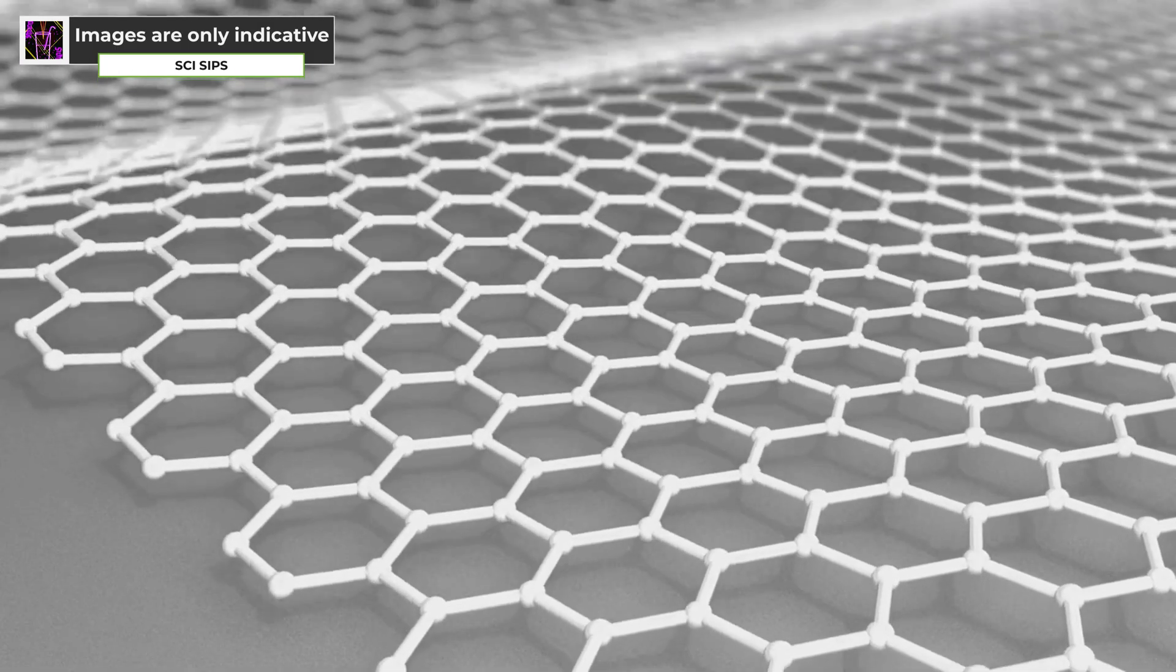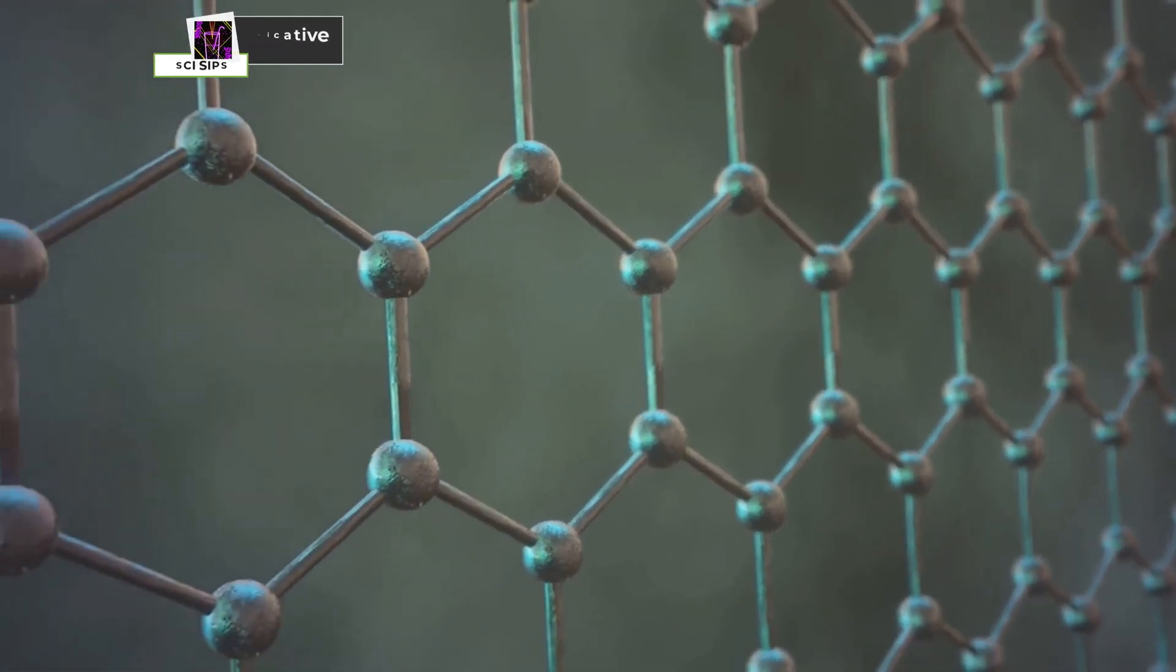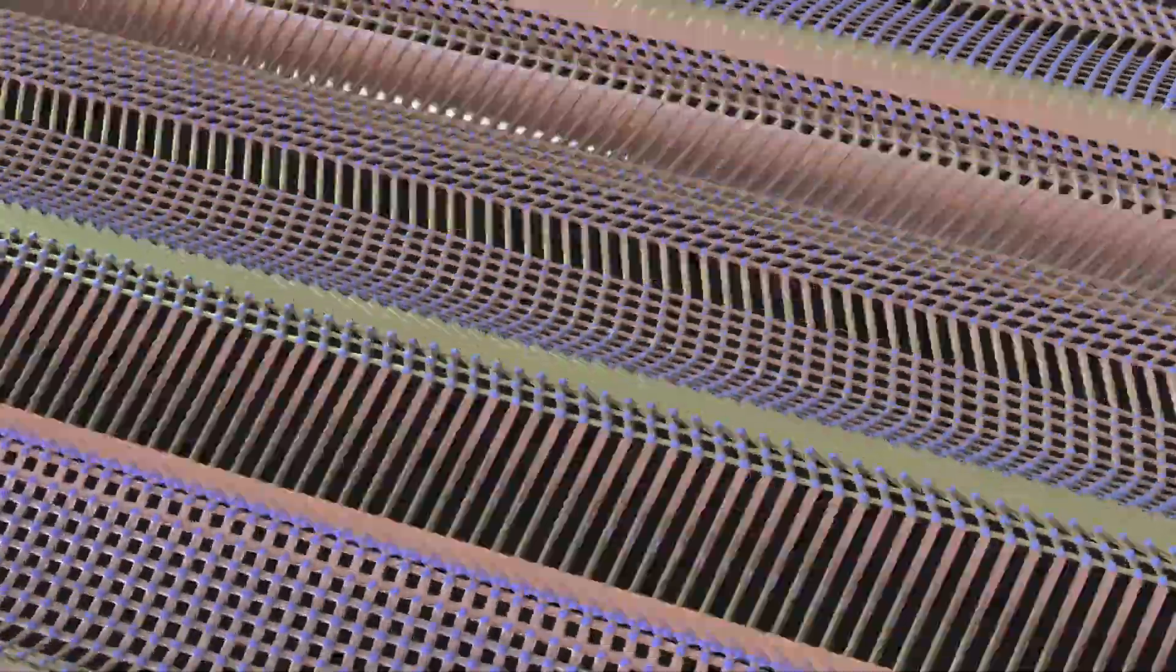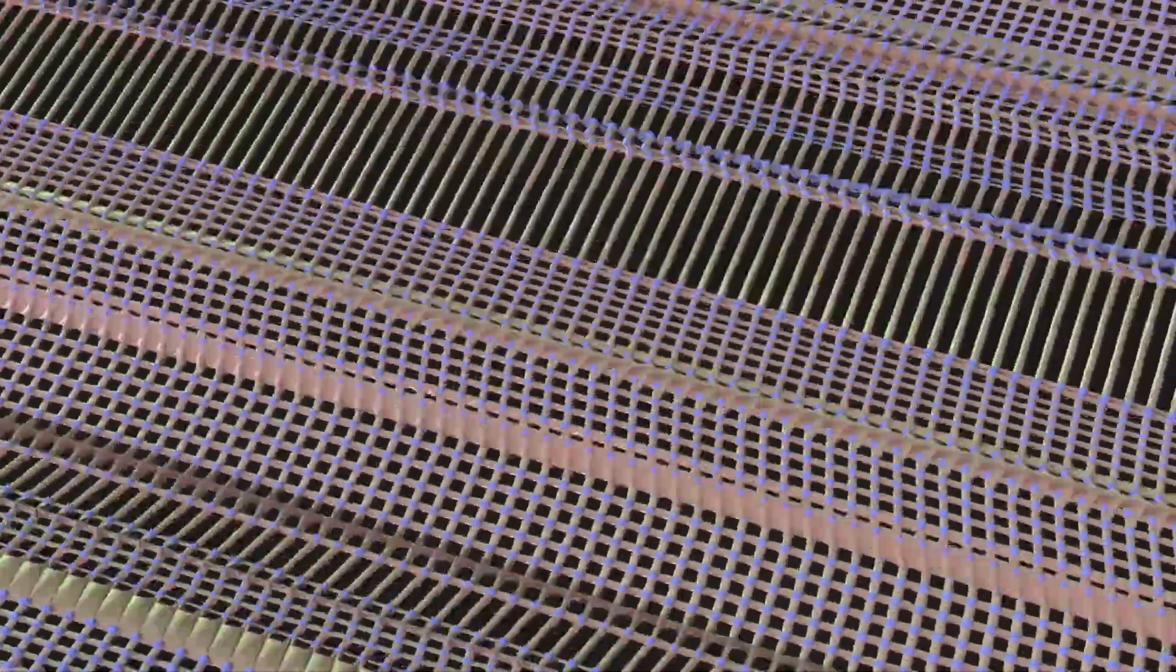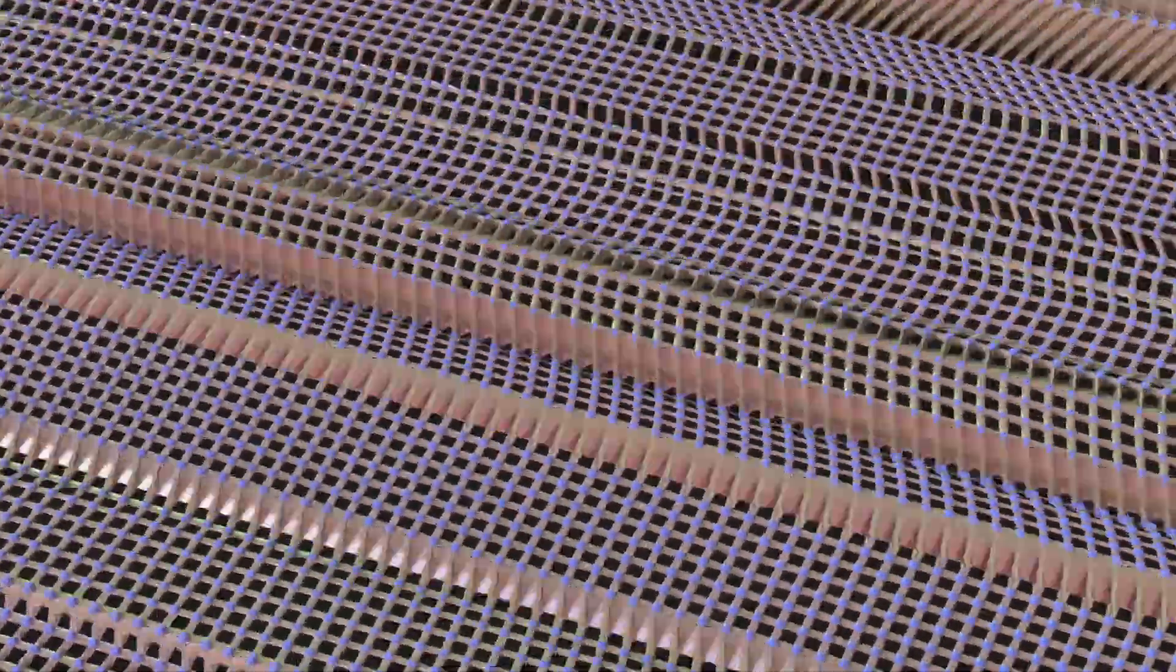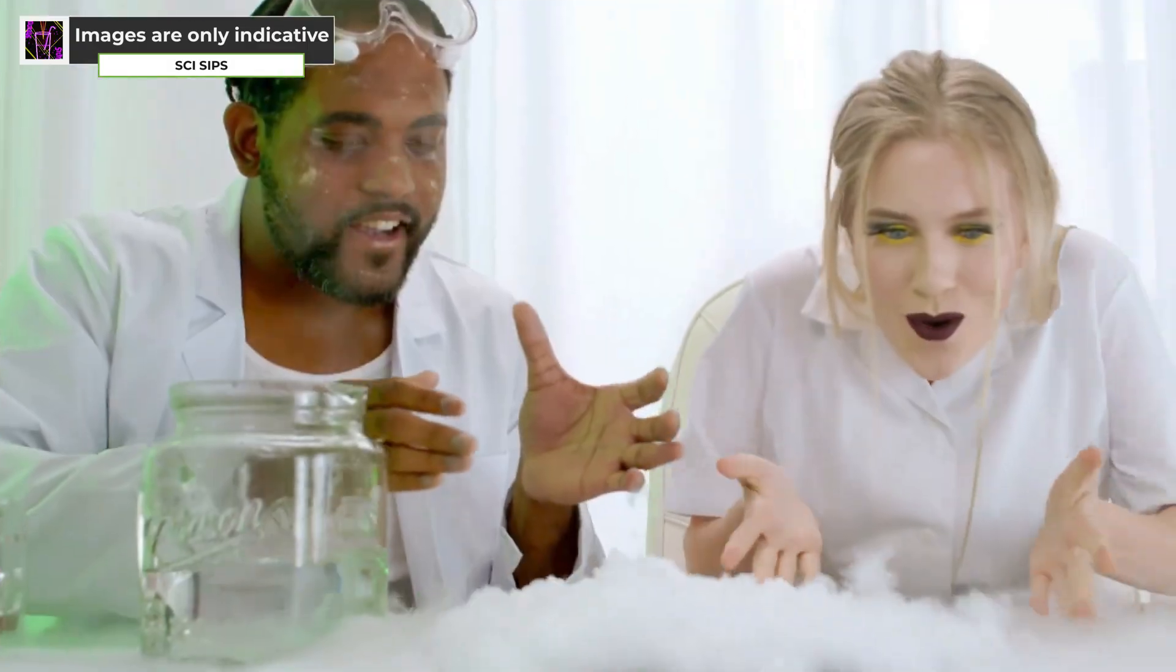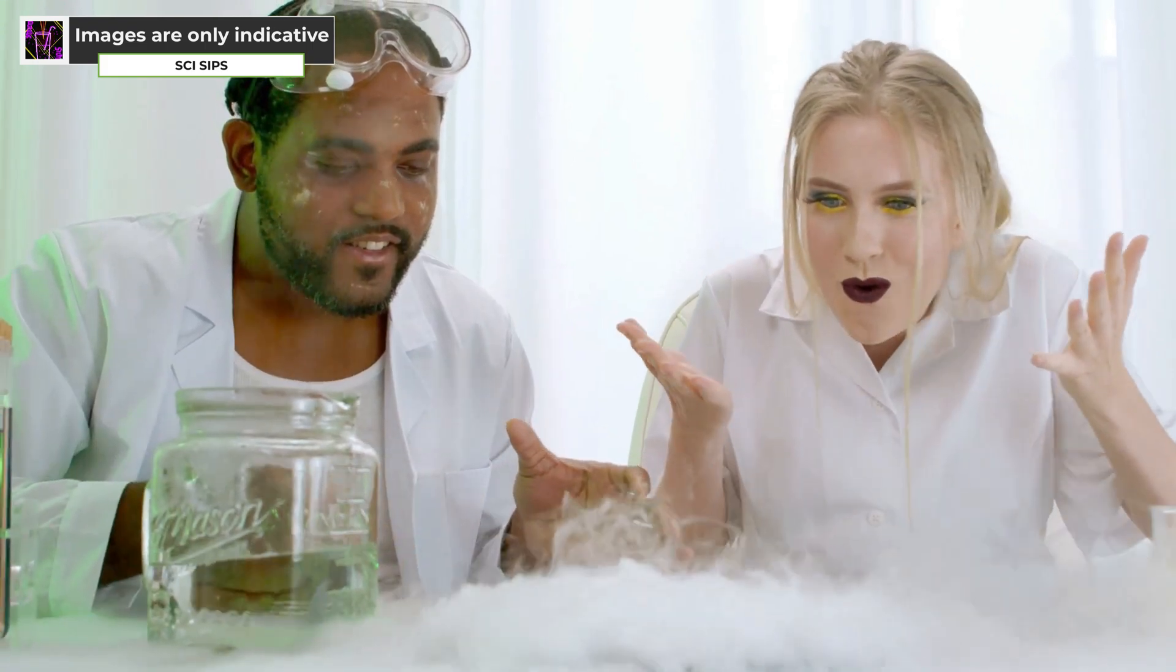First synthesized in 2015, borophene is a single-layer sheet of boron atoms, arranged in a honeycomb-like lattice that defies expectations. Its unique structure gives rise to a remarkable combination of properties, including exceptional strength, flexibility, and electrical conductivity, surpassing even its celebrated cousin, graphene.